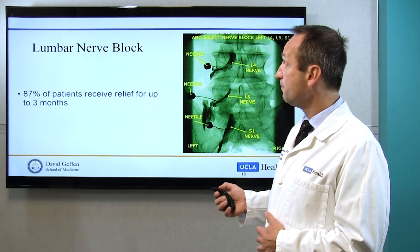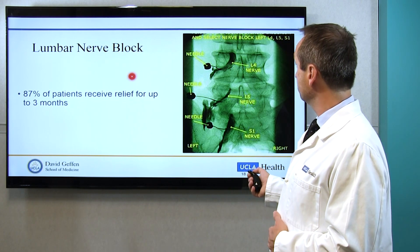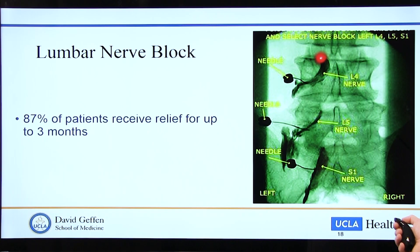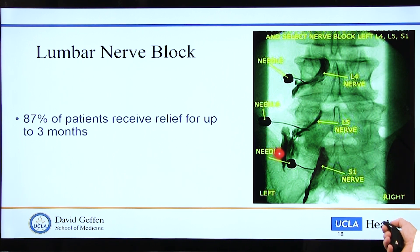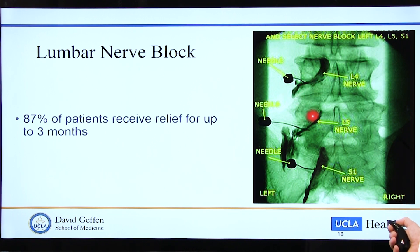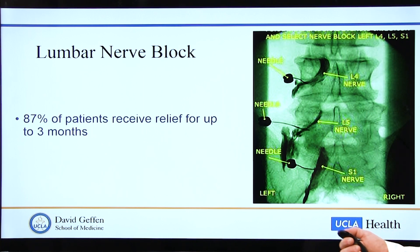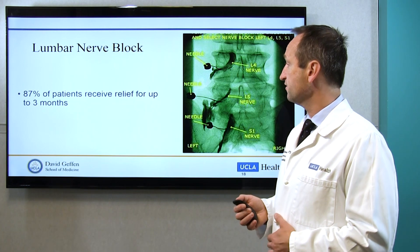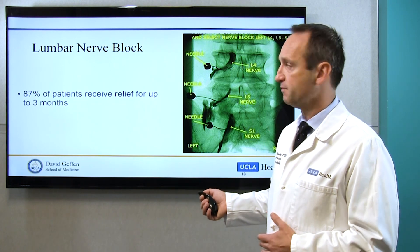This exact example is of the lumbar area — the lower back. As you can see, some patients have multiple areas: this patient actually has three herniated discs pushing on the nerve. We go with one, two, three needles in the same procedure — 15 to 20 minutes — guided by imaging. We inject contrast to make sure we are close to the nerve, as depicted on these L4, L5, S1 nerves on the lower back. And really, by studies, 87% of patients receive relief up to three months, and this can be repeated.